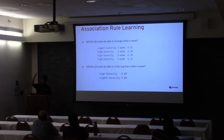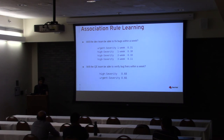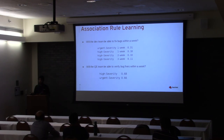Moving up one step in the management chain, you can look at the development team as a whole and ask: what's the chance that the team addresses urgent-severity bugs in a single week? There are different percentages for different time intervals. Similarly you can ask the same of QE teams — will they be able to verify bug fixes? There are many ways to ask questions, and you can also look at individual metrics from the association rules to get additional meaningful insights.